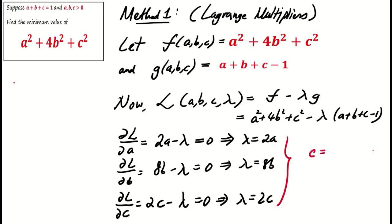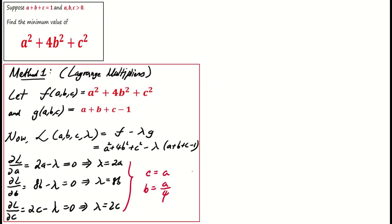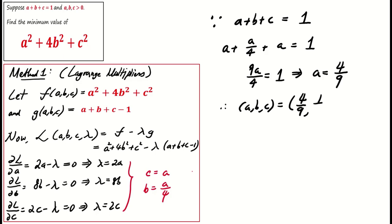Solving this system of equations, we find c equals a and b equals a over 4. Substituting this into a plus b plus c gives us 9a over 4 equals 1. Hence, a equals 4 over 9. Substituting back, we obtain a, b, c equals 4 over 9, 1 over 9, 4 over 9.